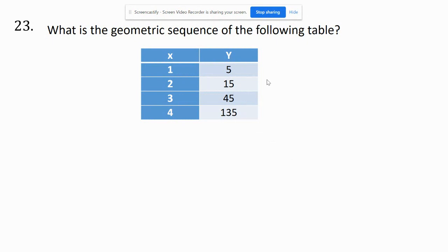What is the geometric sequence of the following table? So we see a table here of x values and y values. And the best way to find these is to simply find your rate.